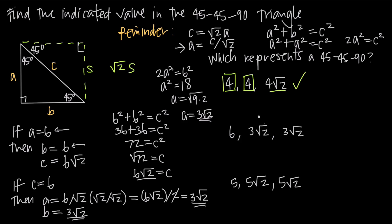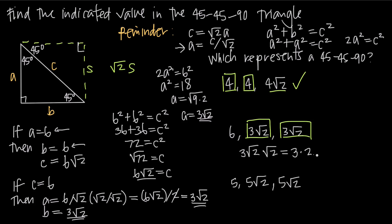Next example: we notice right away that we have two equal side lengths — 3 square root of 2 and 3 square root of 2. The triangle is isosceles. This third side must be the hypotenuse and must equal one of these side lengths times the square root of 2. Taking 3 square root of 2 and multiplying by square root of 2 gives 3 times 2, which equals 6. Because we get 6, which matches the third side length, this also represents a 45-45-90 triangle.